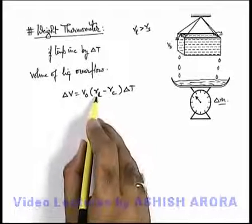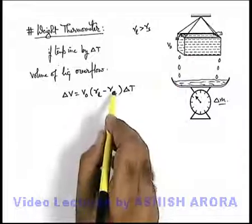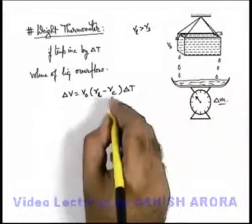Where gamma l is the coefficient of cubical expansion of liquid and gamma c is that of the solid of which the container is made up of.